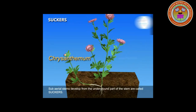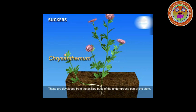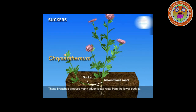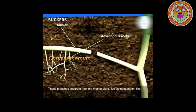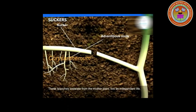Next one is Sucker. It arises from the basal underground part of the main stem. It grows horizontally for a distance under the soil and then emerges obliquely upwards. It develops a leafy shoot and adventitious roots before separating from the mother plant. Example: Chrysanthemum and Mentha.